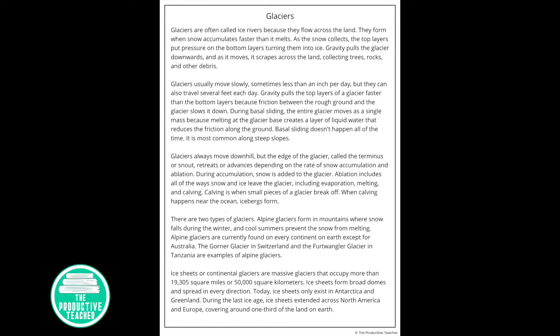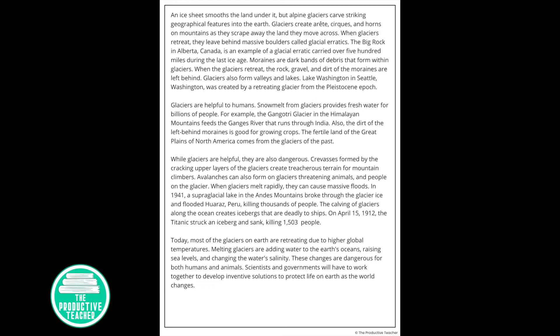During the last ice age, ice sheets extended across North America and Europe, covering around one-third of the land on Earth. An ice sheet smooths the land under it, but alpine glaciers carve striking geographical features into the Earth.